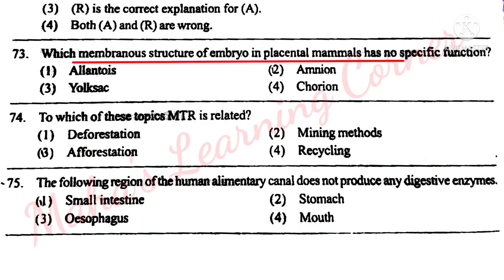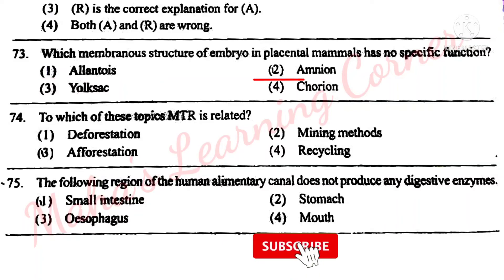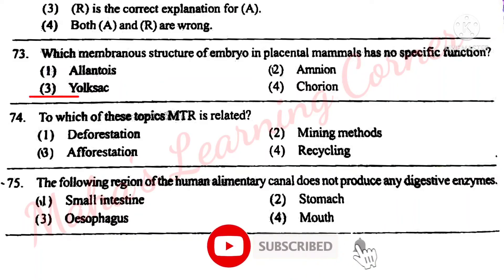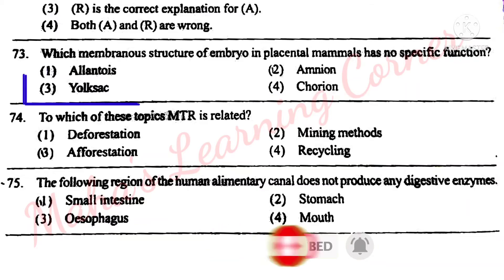Which membrane structure of an embryo in placental mammals has no specific function? Options: Allantois, Amnion, Yolk sac, Chorion. Correct answer: Option 3 – Yolk sac.